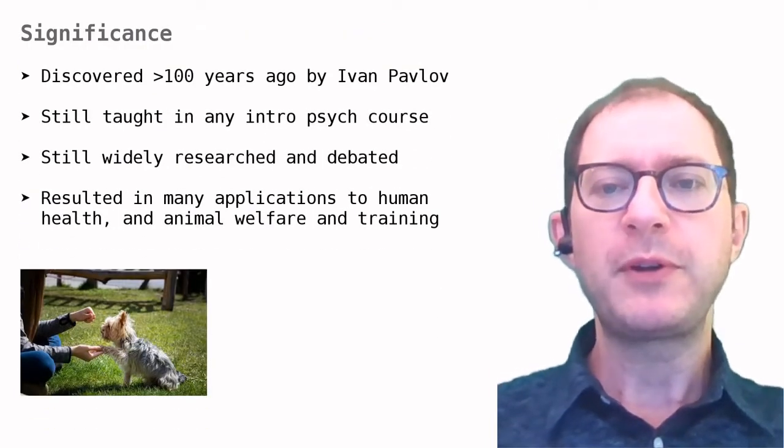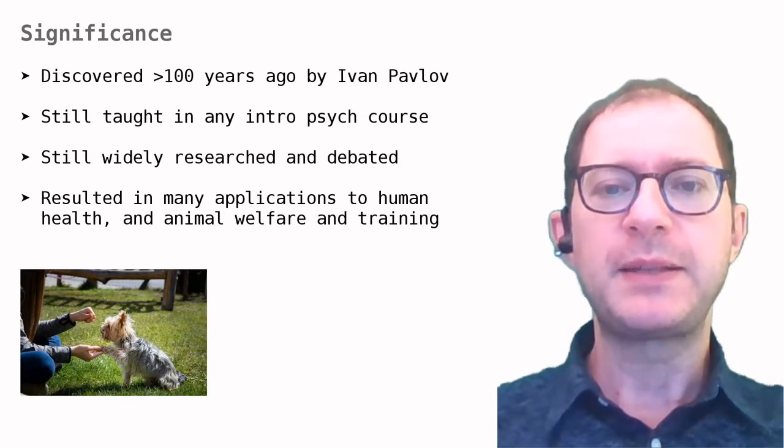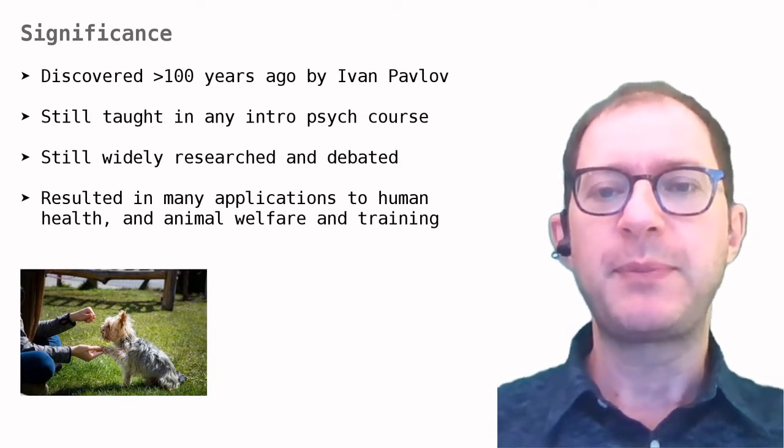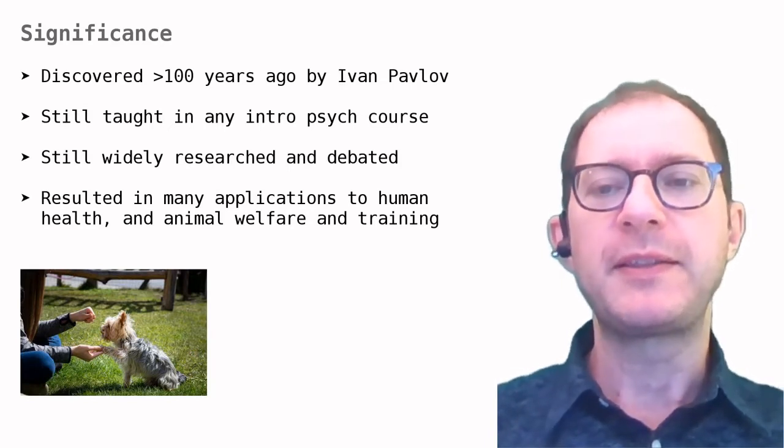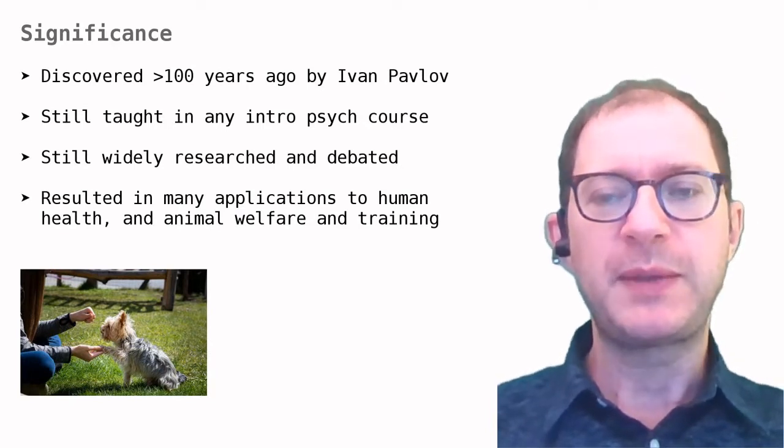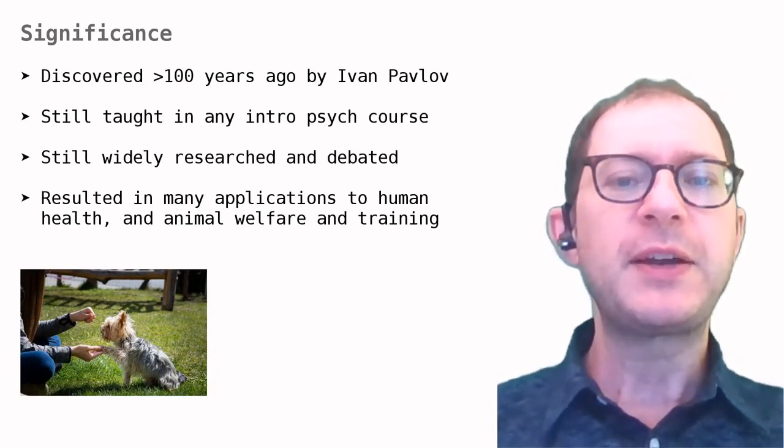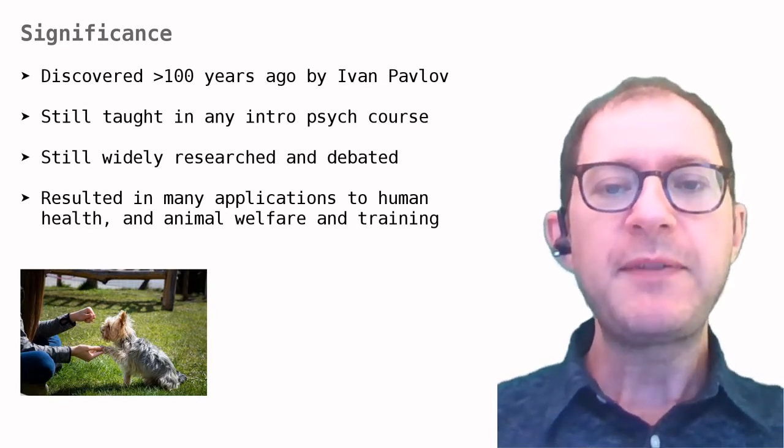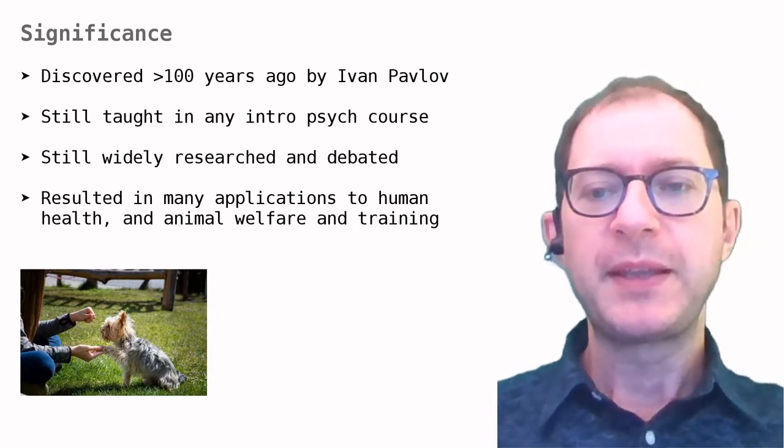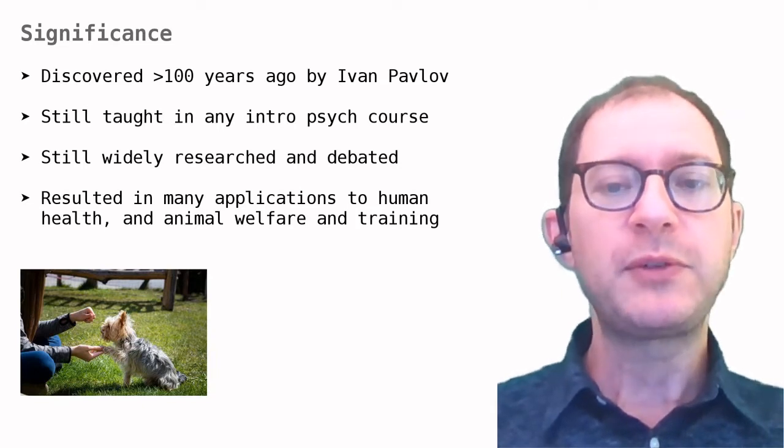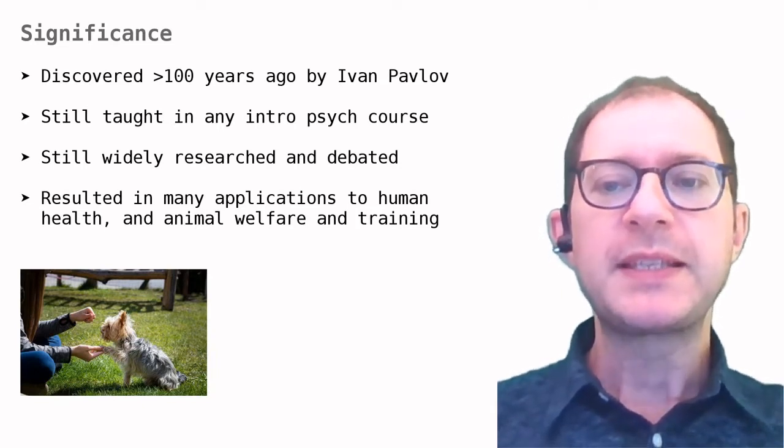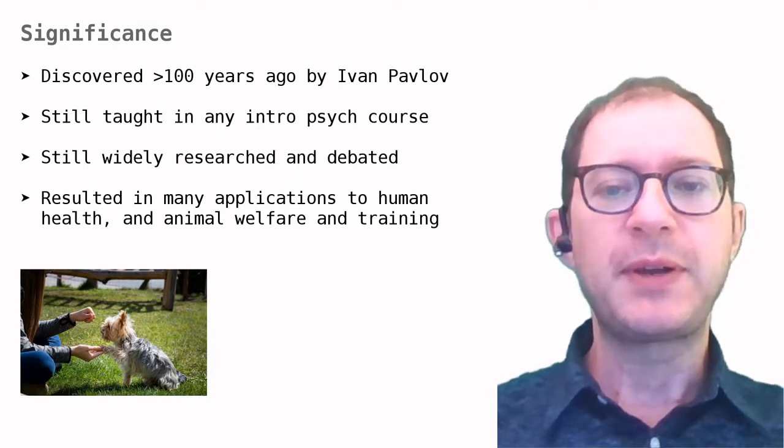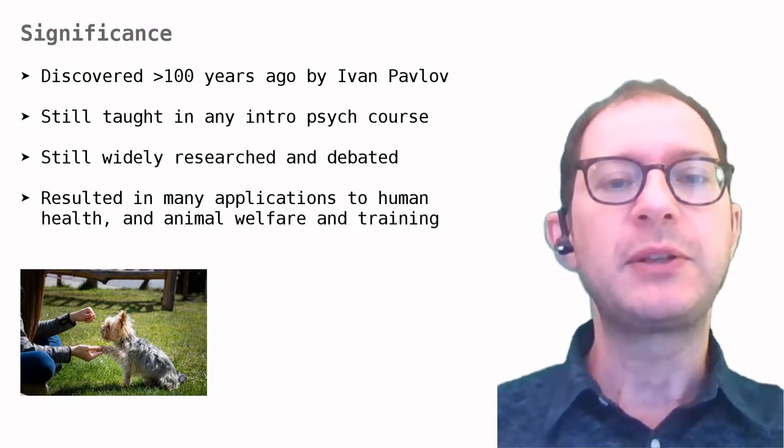What we now call Pavlovian conditioning was first studied by Russian physiologist Ivan Pavlov at the end of the 19th century. His experiments are some of the most famous in all of psychology, and they are now part of all introductory psychology courses and textbooks. Even if the experiments are often simple, the results are intriguing and not always easy to understand.